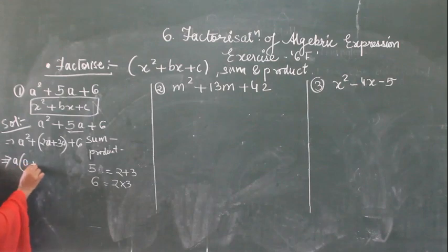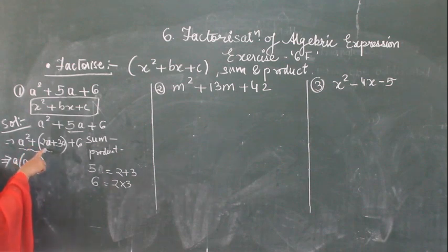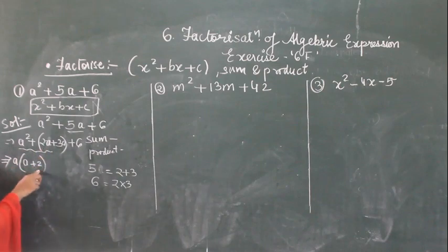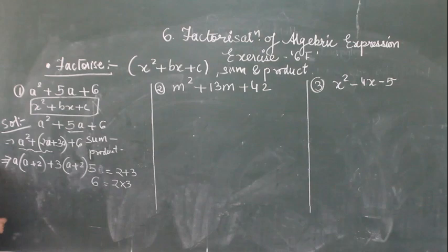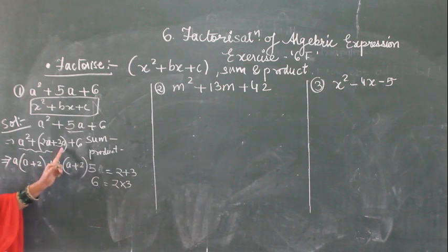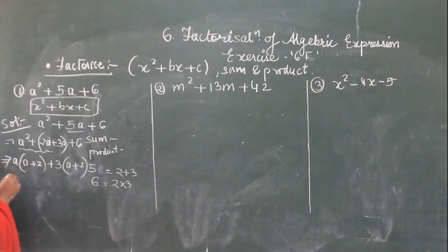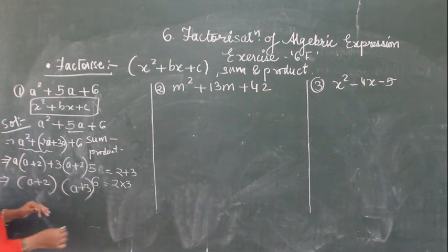If I take out 'a' common I will be left with a plus 2. Then from the second pair, if I take out 3 common, what will remain? a plus 2 again. So a plus 2 is common. From here I have taken out 'a' common so a plus 2 remains, and taking out 3 common also gives a plus 2. So we can write a plus 2 times a plus 3. So this is the answer.